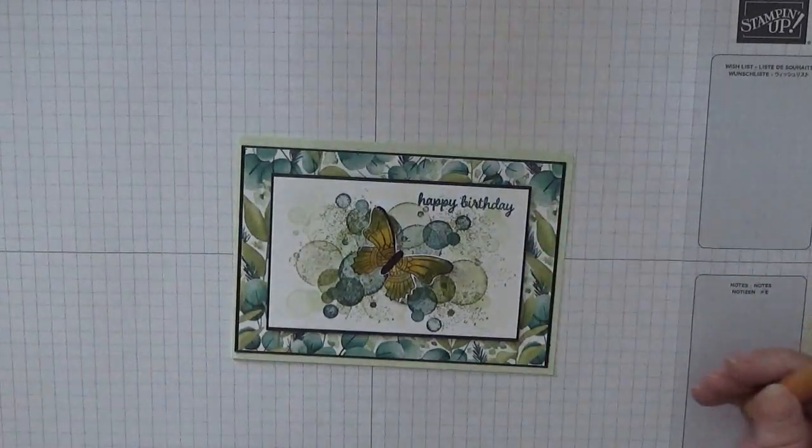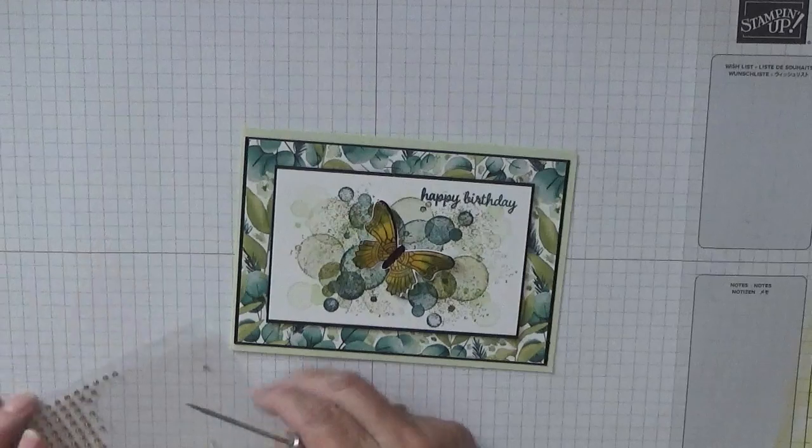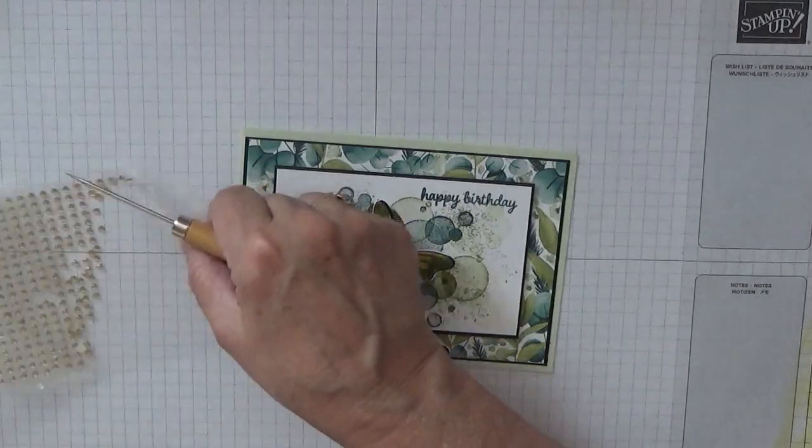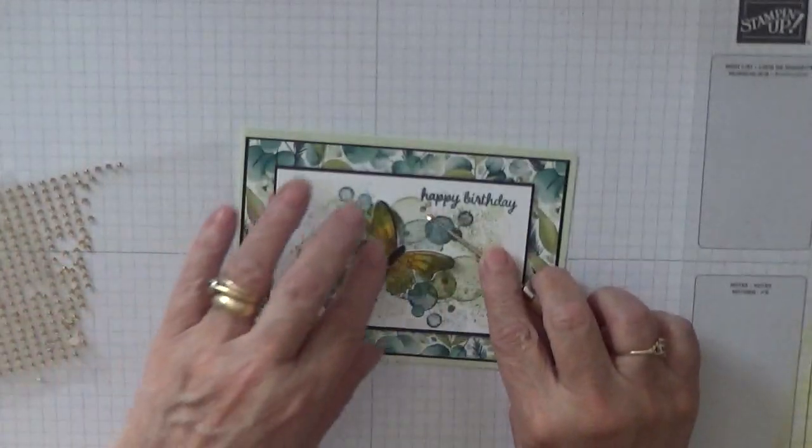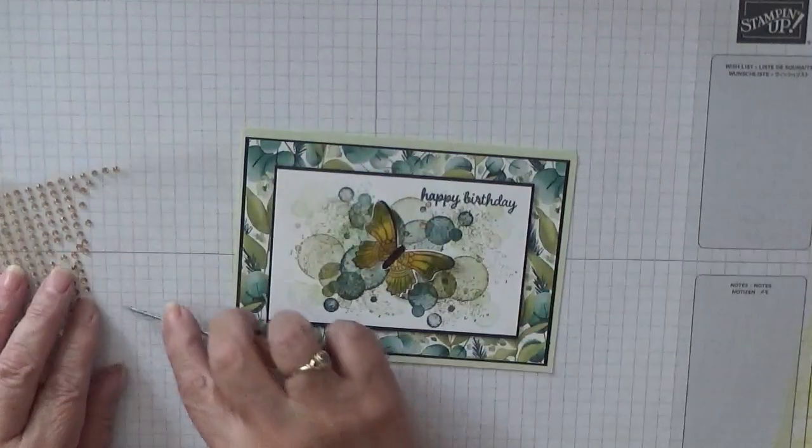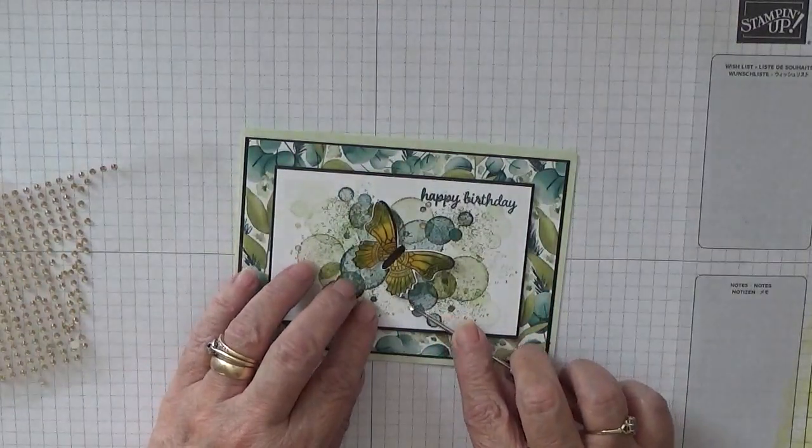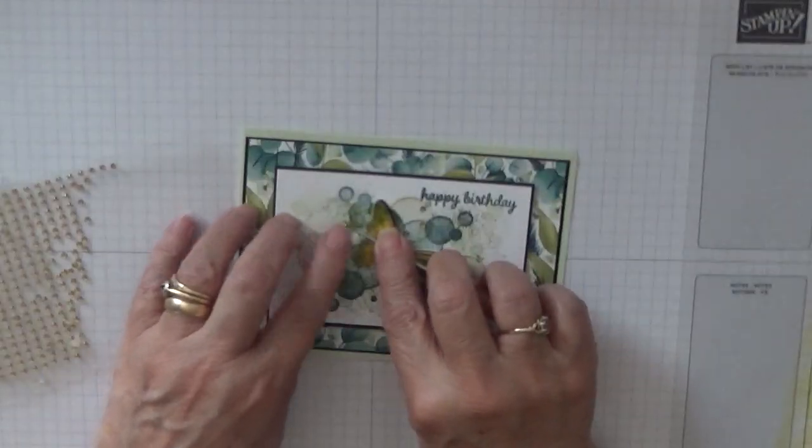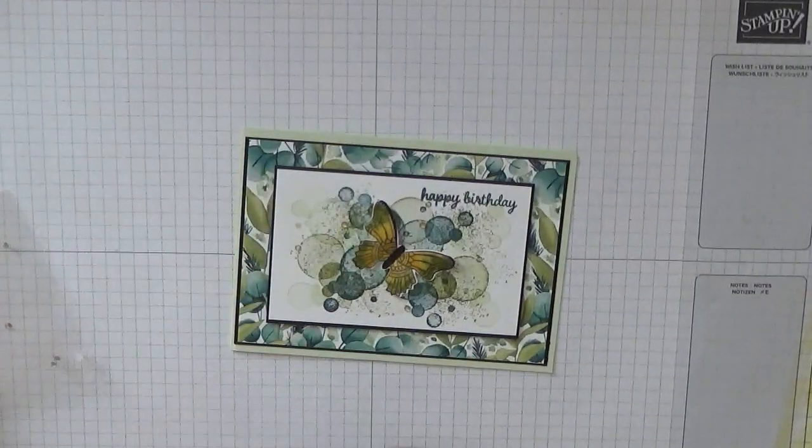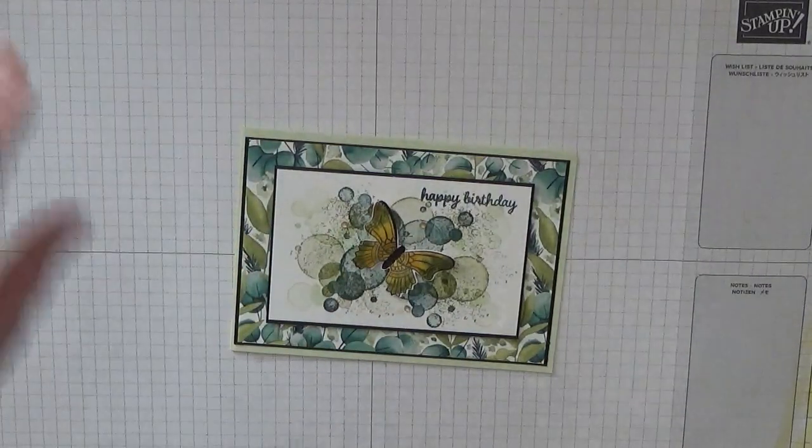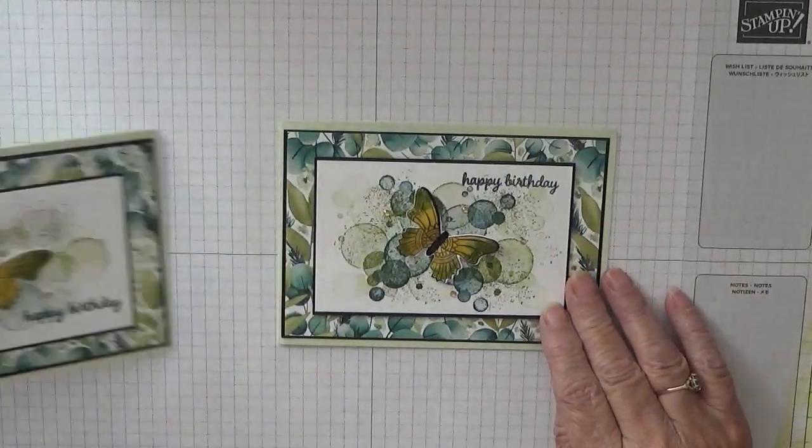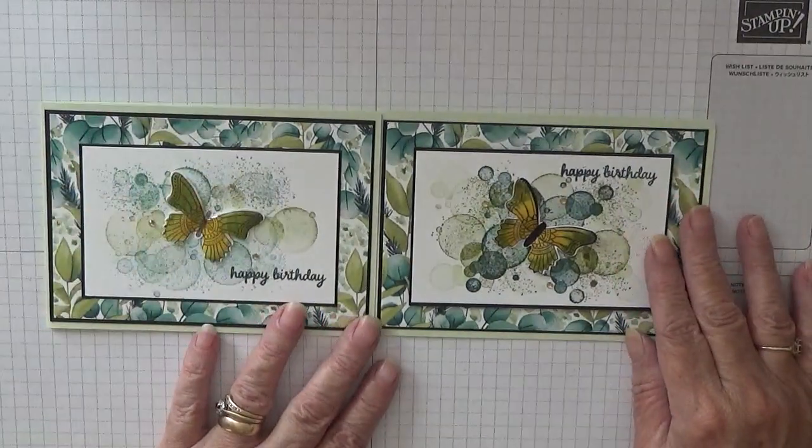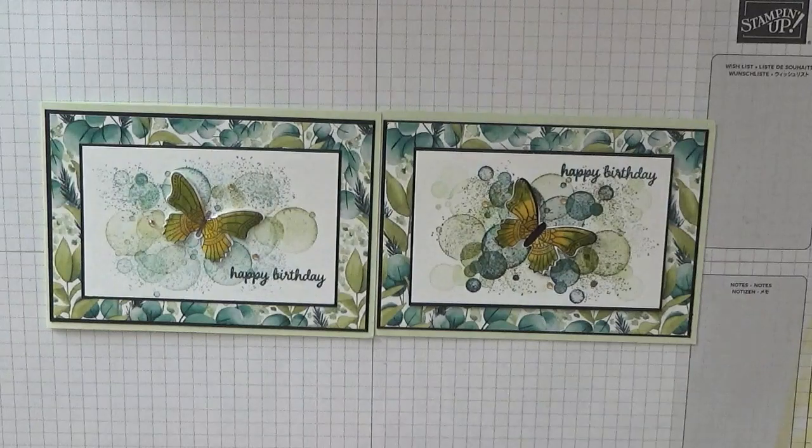Now all we need is some gems. I'm not putting gems on the butterfly. All I'm doing is just putting three gems around like that. And there's my card. You can tell the difference—I did one light and one dark. Hope you like it.